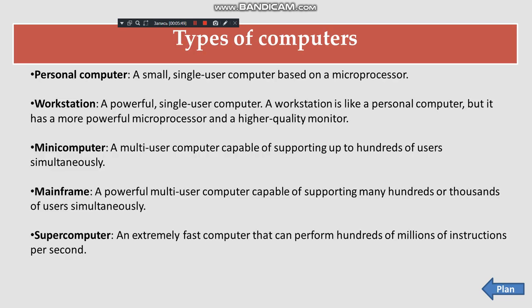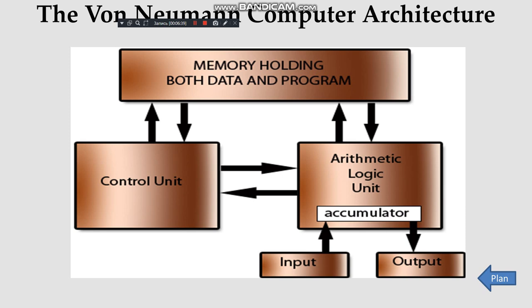Types of computers: personal computer — a small single-user computer based on a microprocessor; workstation — a powerful single-user computer with a more powerful microprocessor and higher-quality monitor; mini computer — a multi-user computer capable of supporting up to hundreds of users simultaneously; mainframe — capable of supporting many hundreds or thousands of users simultaneously; supercomputer — an extremely fast computer that can perform hundreds of millions of instructions per second. The Von Neumann computer architecture consists of memory for holding data and programs, a control unit, input/output, and an accumulator.